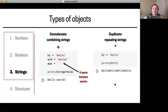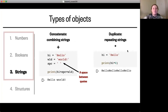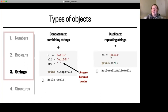When you multiply strings it duplicates the string and puts the repetitions together. In this example, the string 'hello' multiplied by four gives the final string 'hellohellohellohello'. Notice that because the original string didn't have a space in it, there are no spaces in the final string.